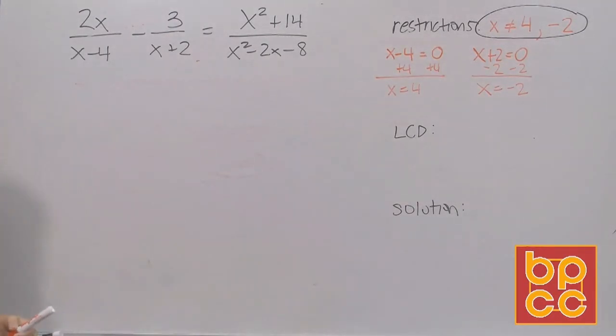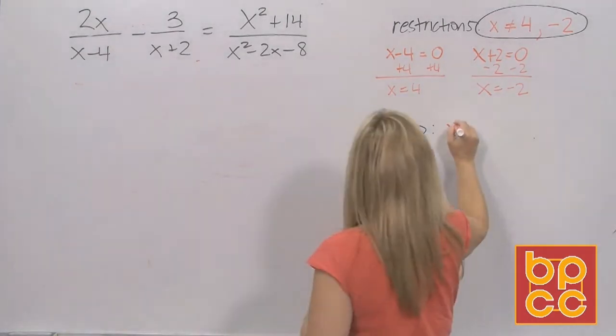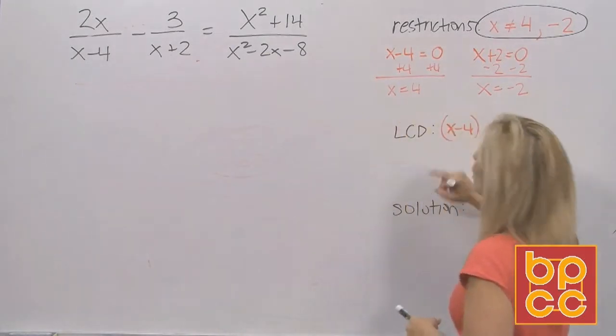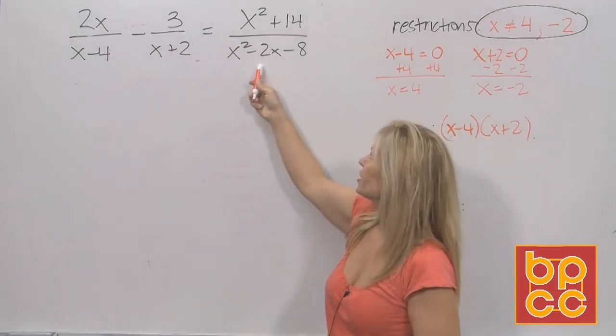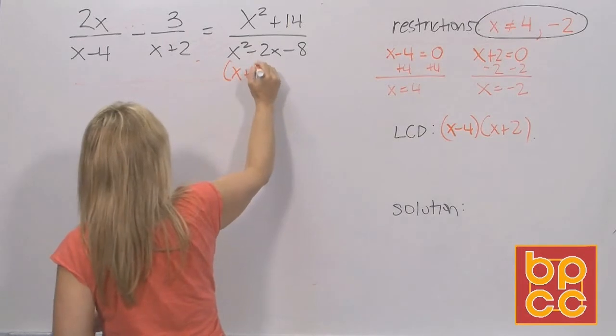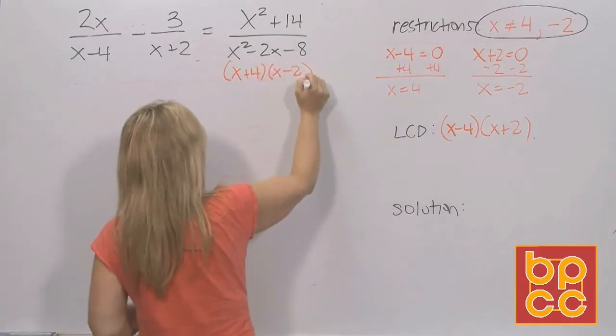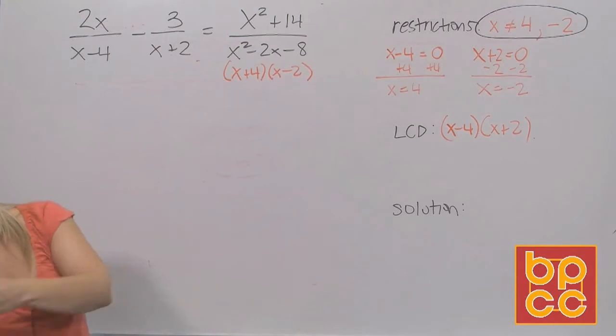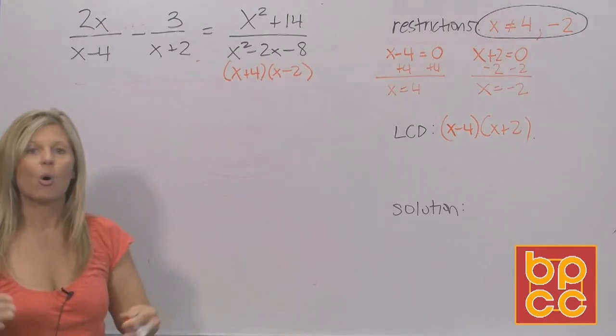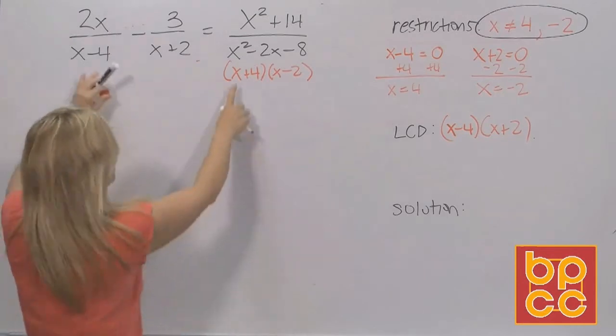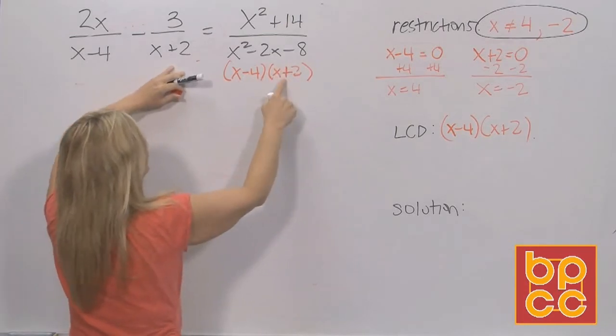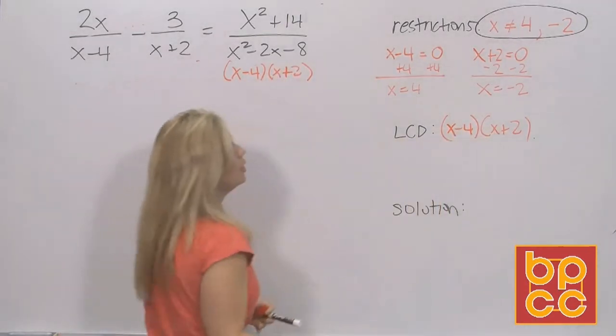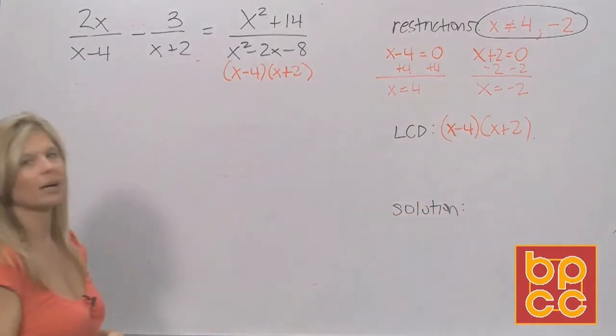So if you remember again in module 1, to find the LCD, you have to look at all the denominators. So we have an x minus 4 in the denominator. We have an x plus 2 in the denominator, and then we just saw a minute ago that this denominator factors to be x plus 4 and x minus 2. So we discussed this back in module 1. To find the least common denominator, all your denominators must be factored. So we already got, I apologize, I have the symbols written wrong here, the x minus 4. We already got the x plus 2. So we don't have to write that again. So this is what your LCD is, x minus 4 and x plus 2.